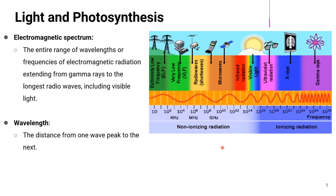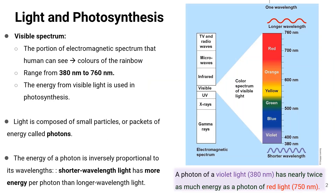As you can see here, there are various kinds of electromagnetic radiation. The purple one, gamma rays, has very short wavelengths, while extremely low frequency (ELF) radiation has very long wavelengths.